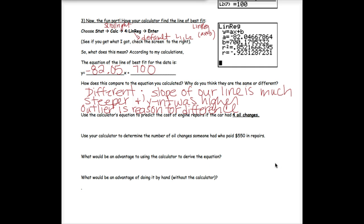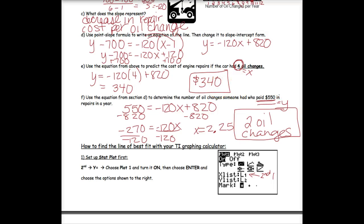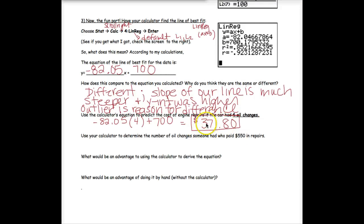So let's look at what the calculator's equation does. We're going to use it to predict the cost of engine repairs if the car had four oil changes. Same thing that we did on the front, only using the new equation. Negative 82.05 times 4 plus 700. When we punch that into our calculator, we've got negative 82.05 times 4, and then we're going to add the 700. That gives us about $371.80. If we compare it to the cost we predicted by hand, it was about $340. So even though the equations are much different, the prediction isn't that much different, at least at that value.